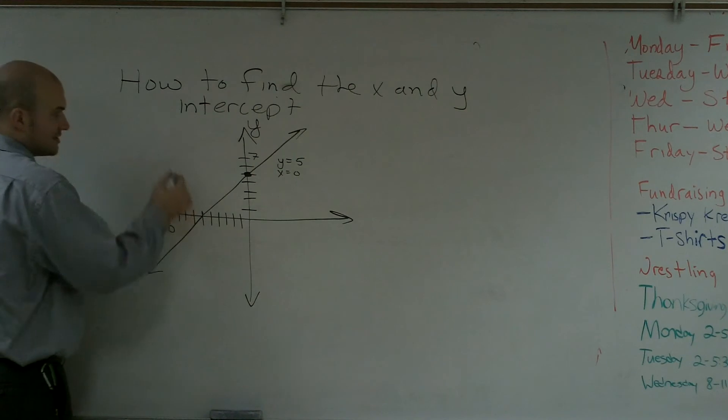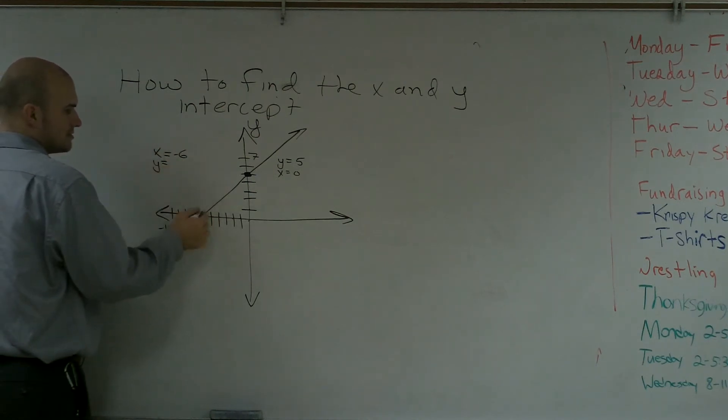Over here, the x intercept is at negative 1, 2, 3, 4, 5, 6. So x equals negative 6, and my y equals 0.